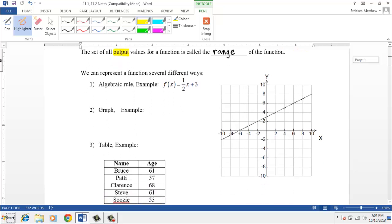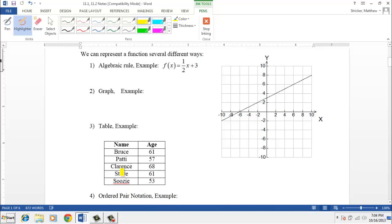We also saw back in chapter three that a table can represent a function where maybe the first column might be like our inputs, or our x's, and the age column might be our output, our y values, or another terminology for y is f of x. y and f of x are the same thing.